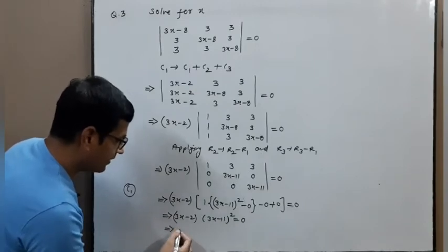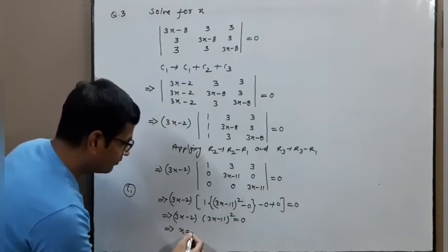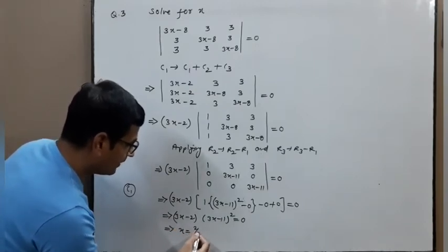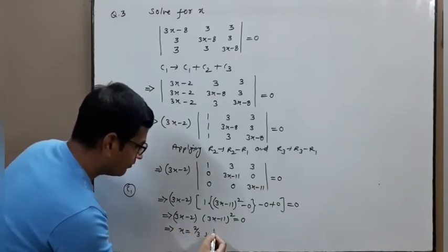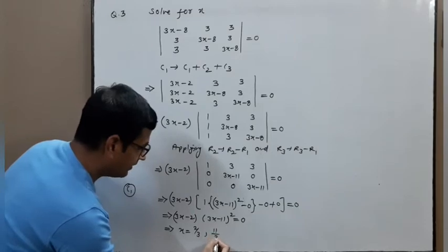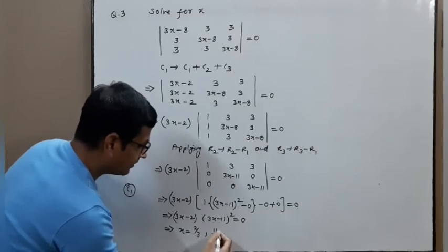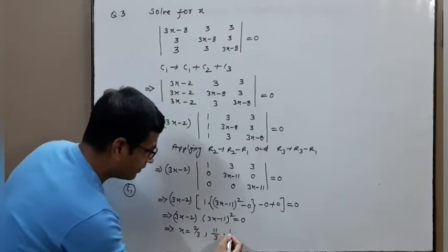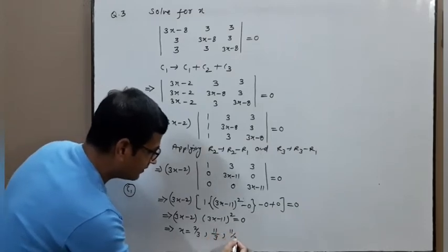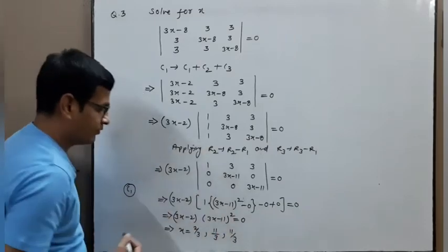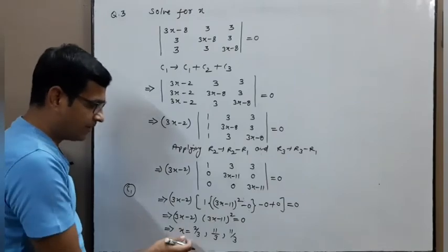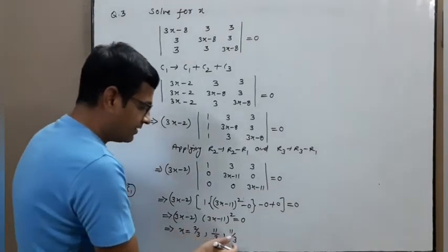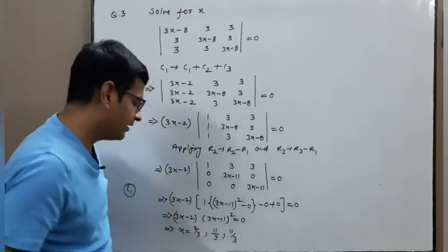So (3x−2) times [(3x−11)² − 0] = 0. Therefore (3x−2)(3x−11)² = 0, giving three real solutions: x = 2/3, x = 11/3, and x = 11/3 (repeated). So the three solutions are x = 2/3 and x = 11/3 (double root).